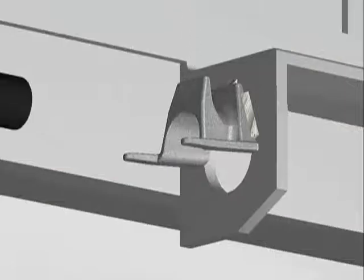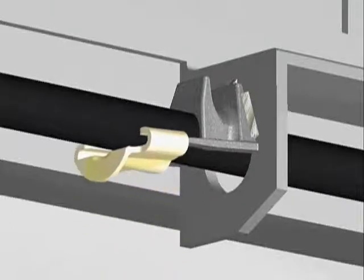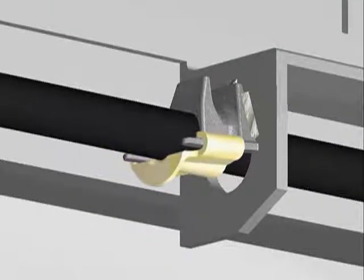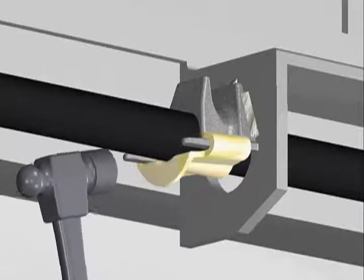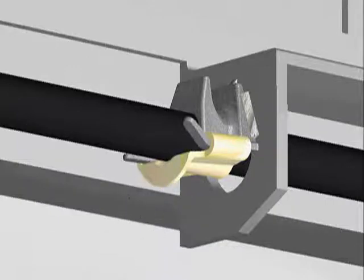Driving of the wedge provides consistent clamping forces compared to the large variation that can occur when torquing nuts on U-bolts. It is also obvious when the pipe anchor wedge is applied correctly, whereas it is difficult to discern if U-bolts are properly tensioned.